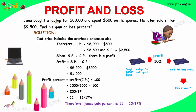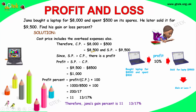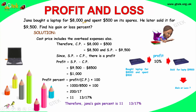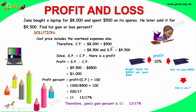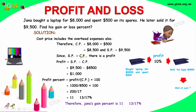So it is a gain. Bought laptop for $8000 and spent $500, sold for $9500. The cost price is equal to the cost of the laptop $8000 plus $500 spent, so the total cost price is $8500. He sold for $9500, so the selling price is greater than the cost price, so there should be a profit.